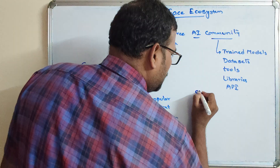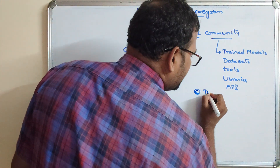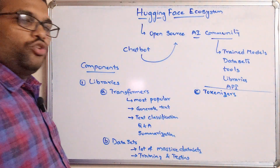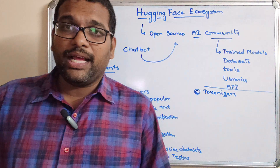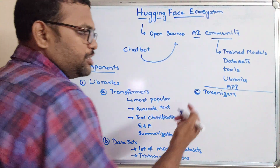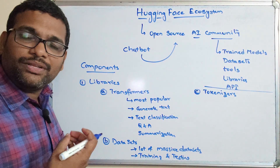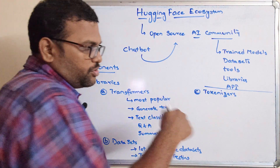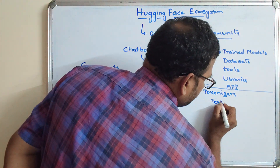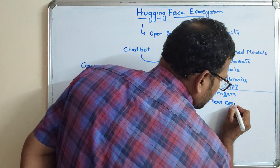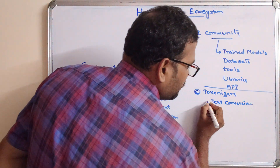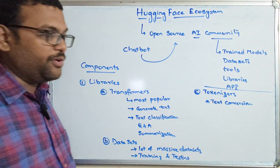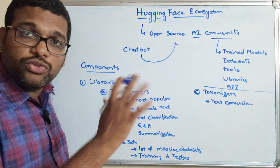The third library is Tokenizers. A token is the smallest part of a program. Tokenizers means the text — whatever text we want to process — will be represented in a numbers format. So it handles text conversion, converting tokens into numbers or another format. This is also one library, and it includes many tokenizer options.